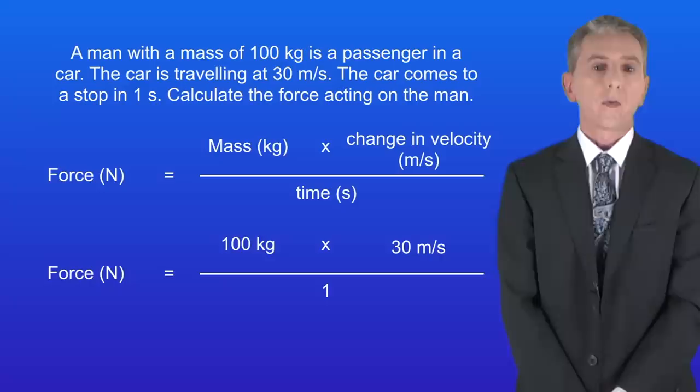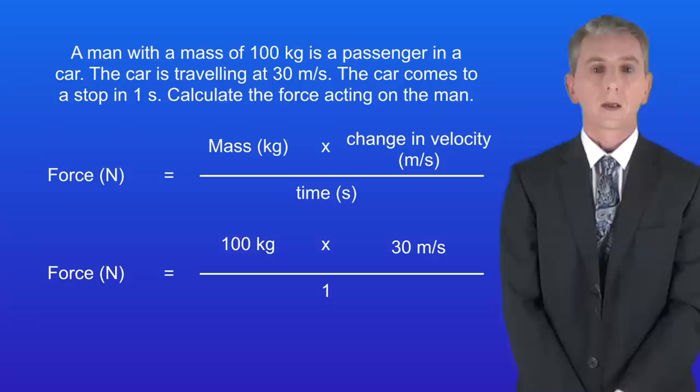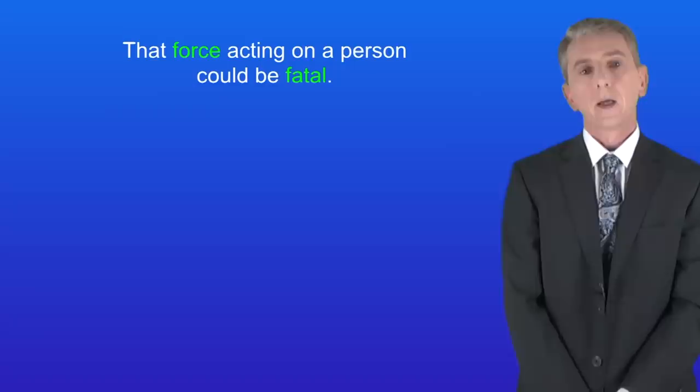Okay, the man has a mass of 100 kilograms. The initial velocity was 30 meters per second and the final velocity was zero. This means that the change in velocity is 30 meters per second. The time taken is one second. Putting these into the equation gives us a force experienced by the man of 3000 newtons.